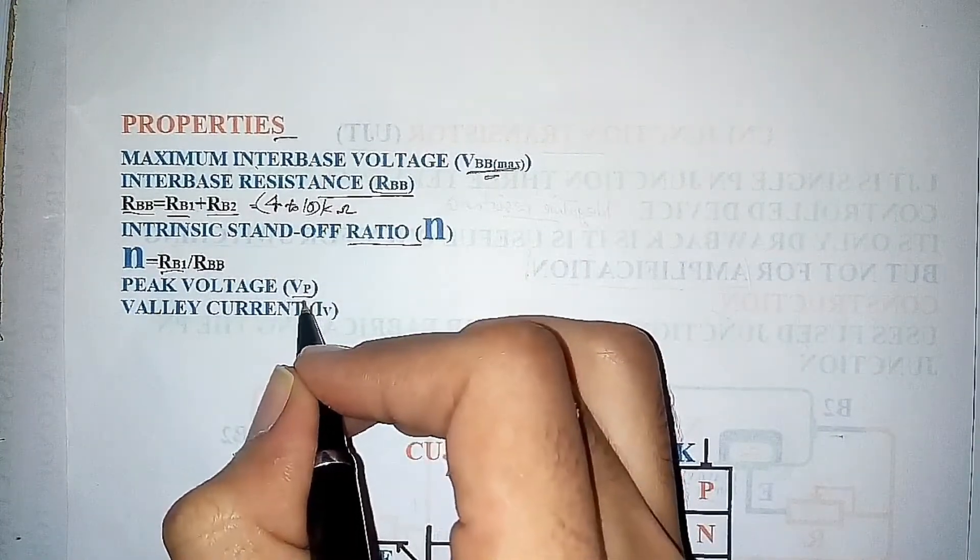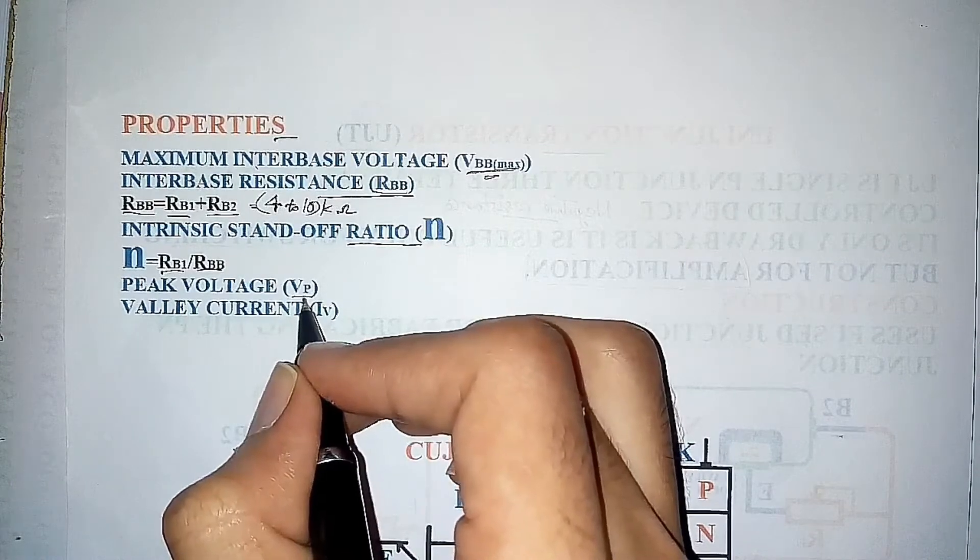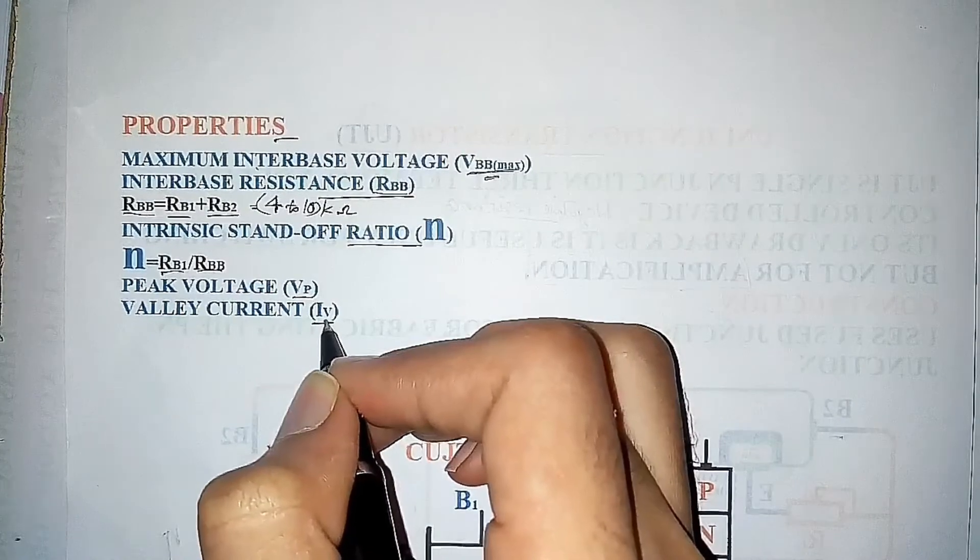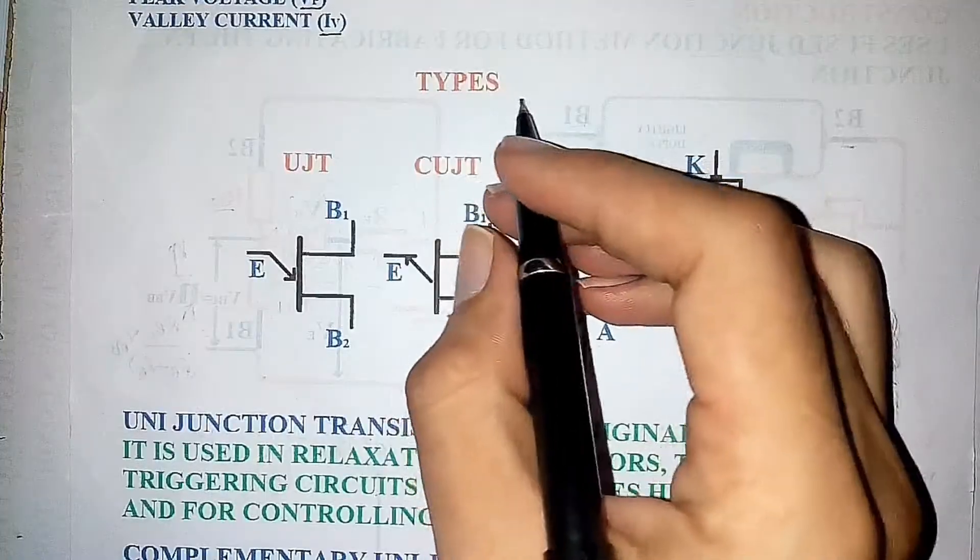The peak voltage is the value at which the UJT is turned on. Valley current is the value at which the device gets saturated.